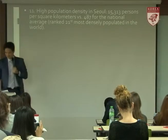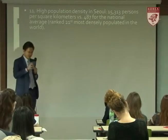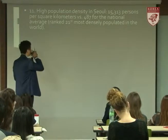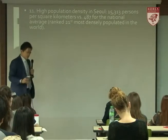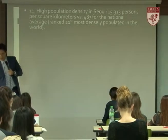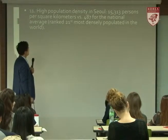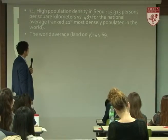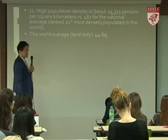The high population density in Seoul is 15,000 people per square kilometer, versus the national average of 487, while the world average is only 44.